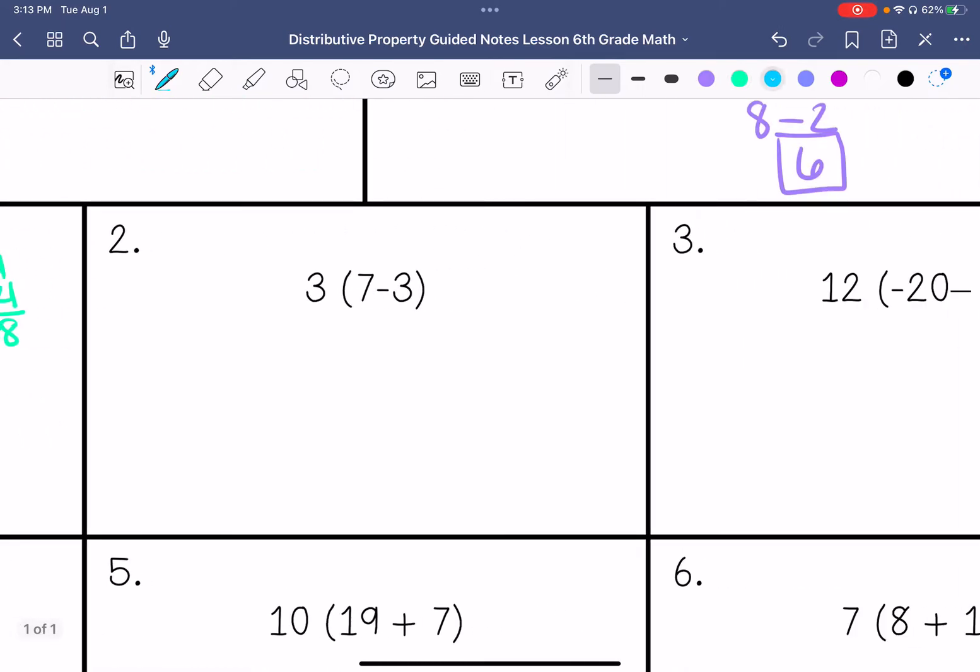All right, number 2. 3 times 7 is 21, 3 times 3 is 9. 21 minus 9 is 12.